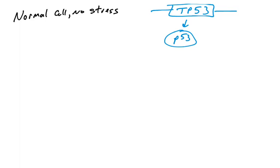But when p53 is made, it can encounter its binding partner, another protein called MDM2. So we've got a new protein here, MDM2. This protein, MDM2, is an E3 ubiquitin ligase.